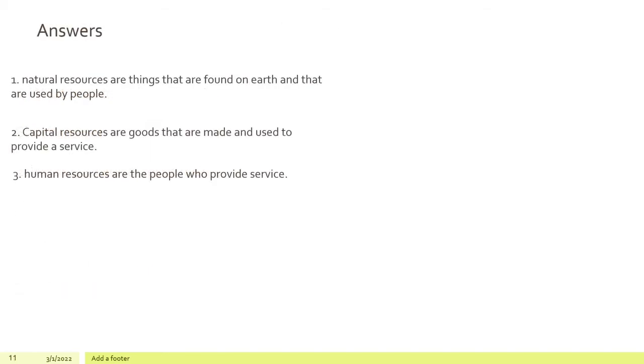The answers are: Number 1, Natural resources are the things that are found on earth and that are used by people. Number 2, Capital resources are goods that are made and used to provide a service. Number 3, Human resources are the people who provide service.